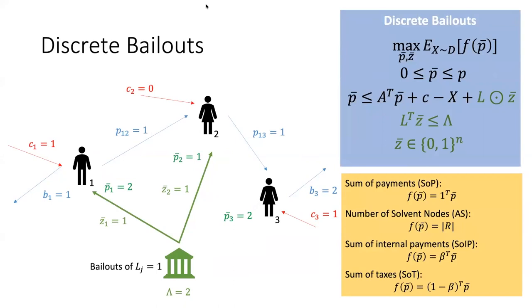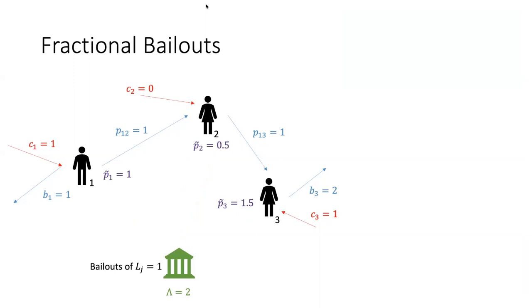More specifically, we can formulate the optimal allocation problem as a mixed integer linear programming problem in which we maximize any strictly increasing welfare objective, such as the sum of payments within the network, the total number of solvent nodes, the sum of payments inside the network, or the sum of payments outside the network — which can potentially be thought of as taxes. We also denote the constraints related to the bailouts.